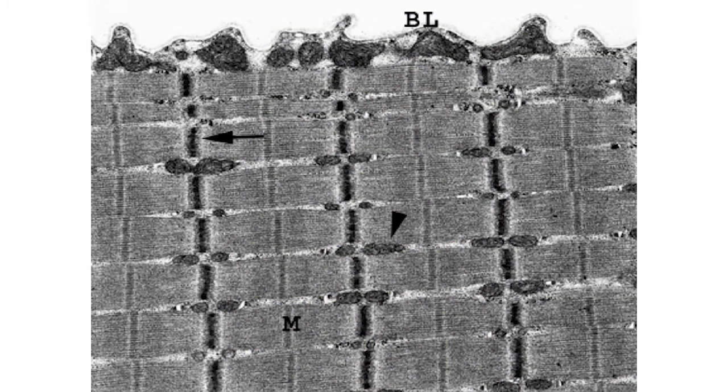This electron micrograph shows some of the mitochondria. There are a whole host of different problems where, out of a 30 or 40-step chemical process, one enzyme will be missing or just deficient — just one — and it could be any one of those 40, and then the cell doesn't work right.